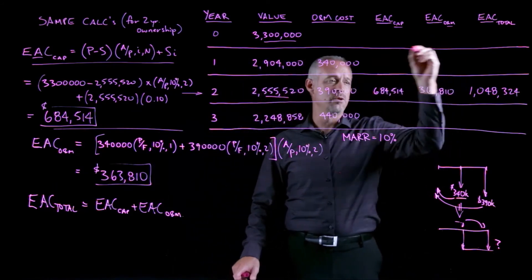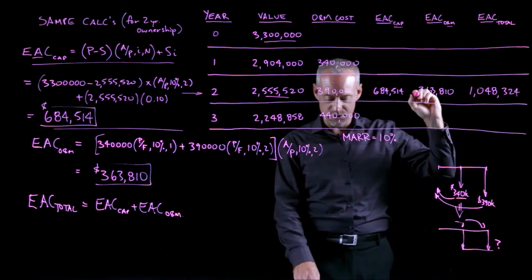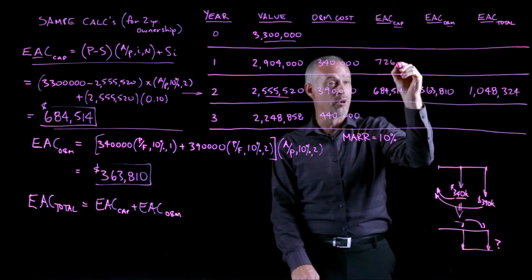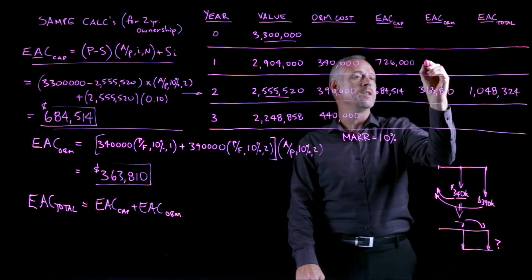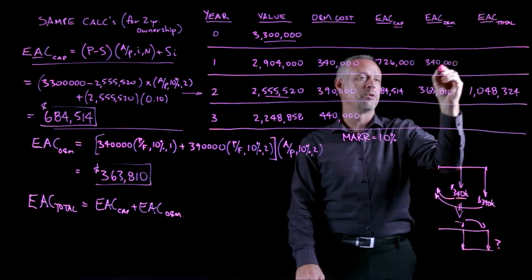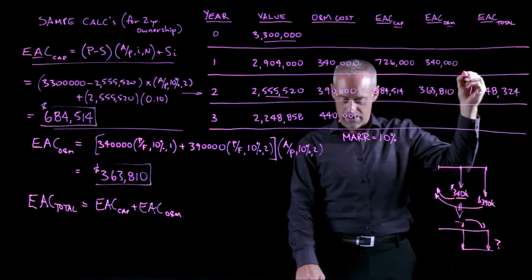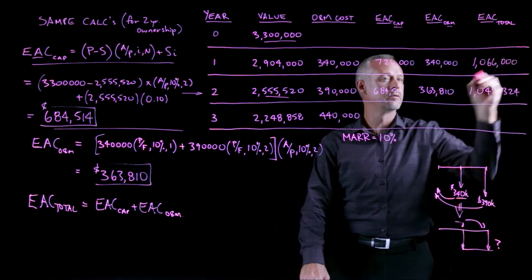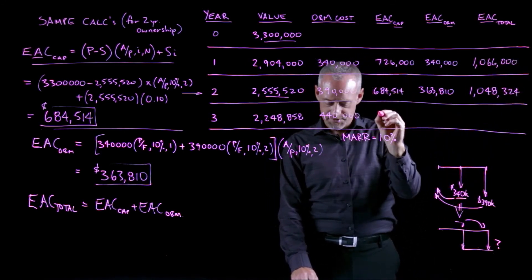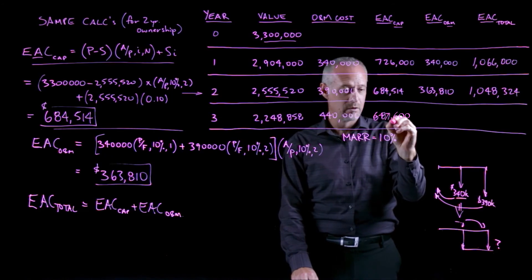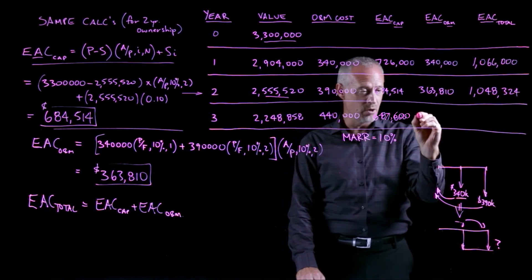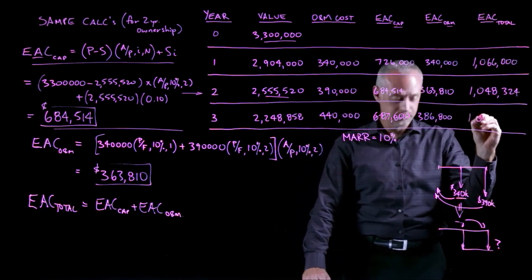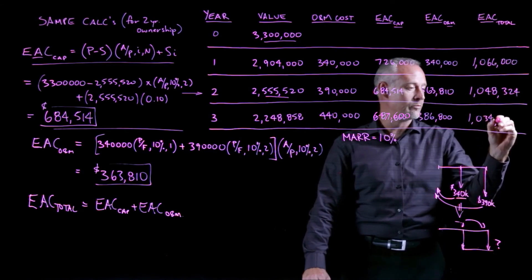Now you can attempt the same calculations and try to fill in all these numbers in the table. I can write what you should get in round figures. The EAC cap for owning for one more year is around $726,000. The EAC O&M is exactly $340,000 because it's one year. And the EAC total would be $1,066,000. If I own for three years, the EAC cap is $687,600, and the EAC O&M is $386,800, and the total is $1,034,400.